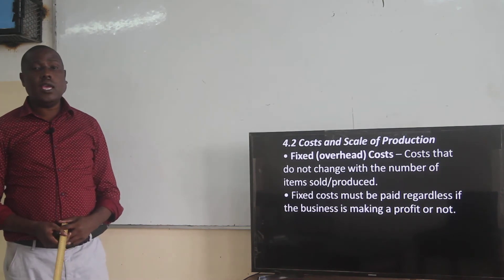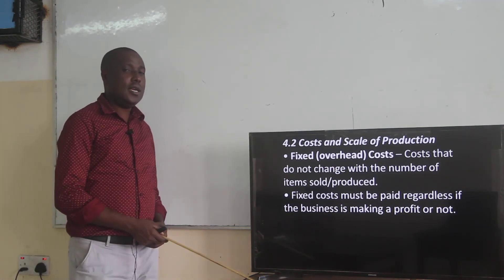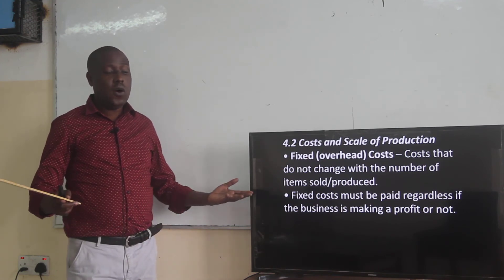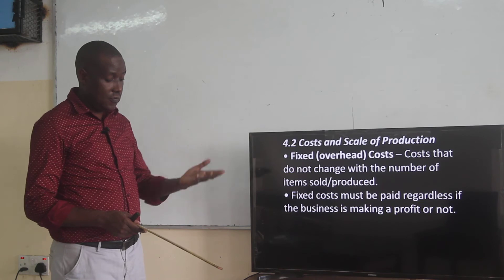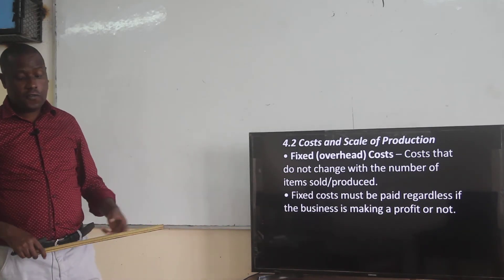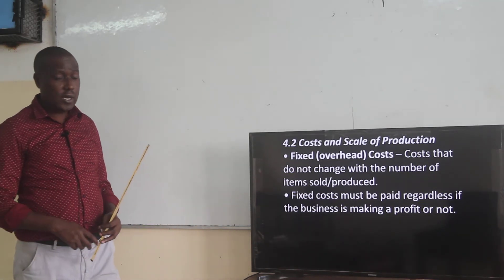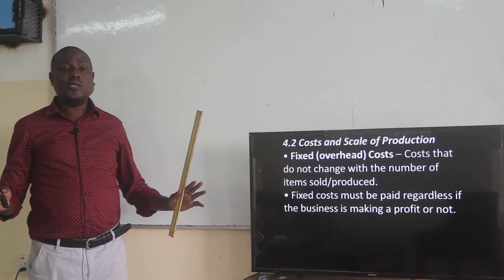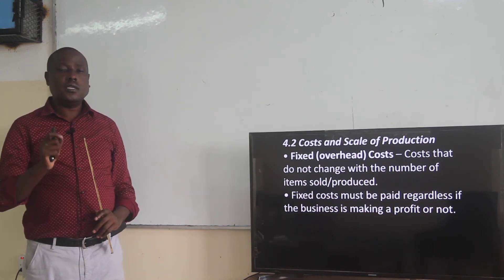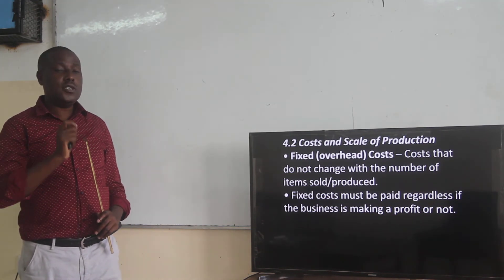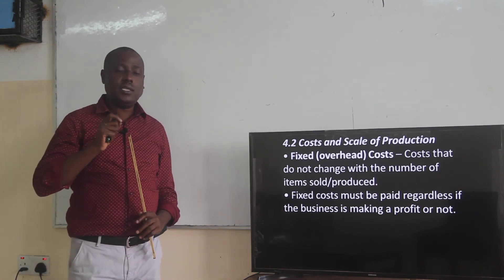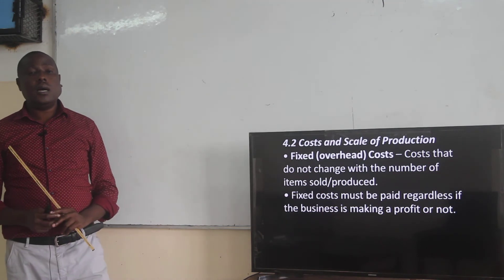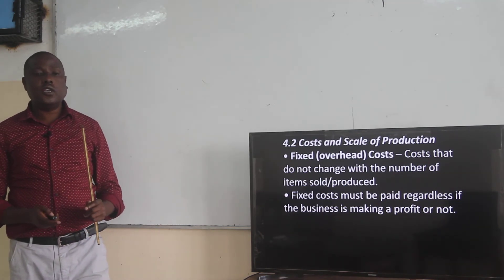They occupy offices and owe electricity costs. Their aircraft were not operational until the 15th when they started domestic flights. Since March their aircraft were not flying — especially those that carry passengers. Yet they had to pay rent if they had rented any property. So those are some of the fixed costs.